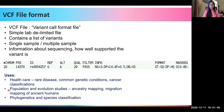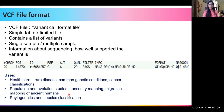Analyzing and filtering variants and associating them with diseases of interest has many clinical uses: looking at variants in rare diseases, common genetic conditions, and cancer classification. It also applies to population and evolution studies, including ancestry mapping, migration studies, and mapping of ancient humans, as well as phylogenetics and species classification.